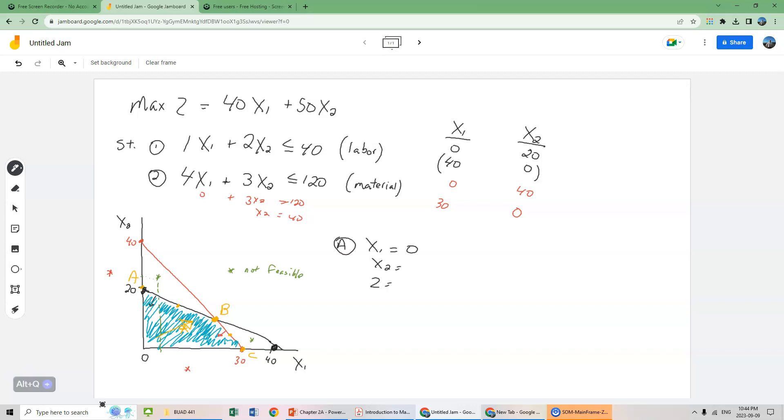x2 is exactly 20. So we put that back into our objective function up here. We have 40 times 0 plus 50 times 20 is going to equal 1000. So that's our profit if we were to produce 0 bowls and 20 mugs.